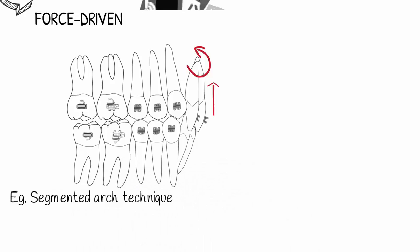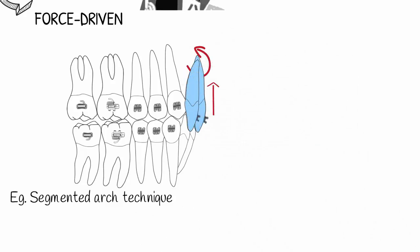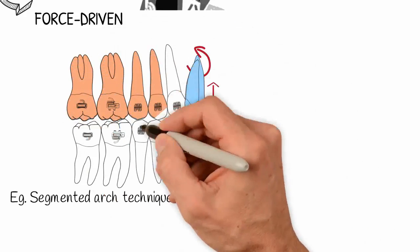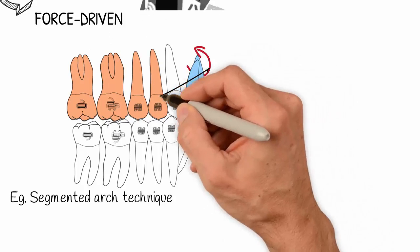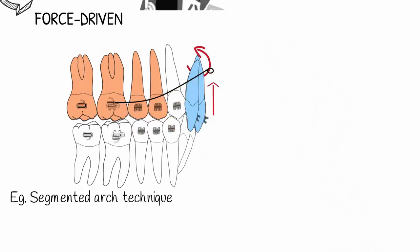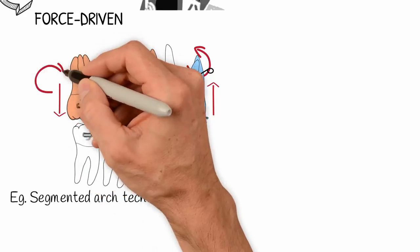As the name implies, this technique segments the dental arch into an active unit represented by the teeth you want to move, and a reactive unit represented by the anchor teeth you do not want to move. With this technique, you are able to define both the wanted and unwanted force of your orthodontic mechanics.